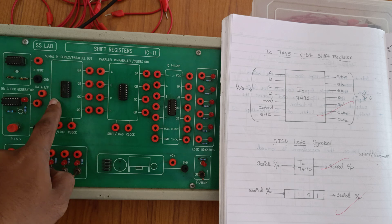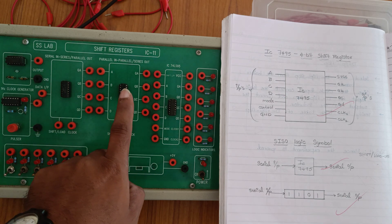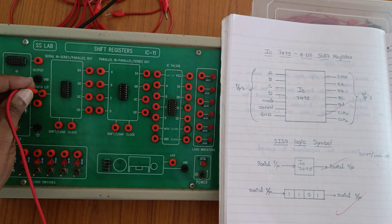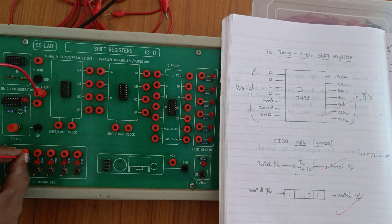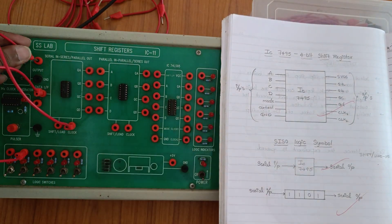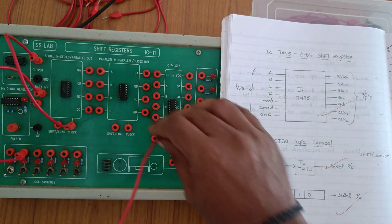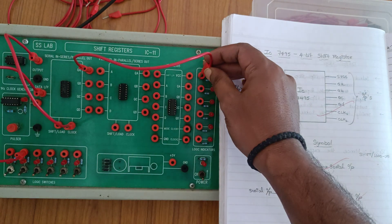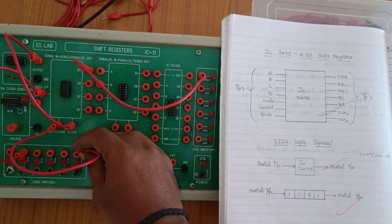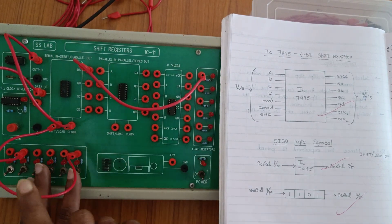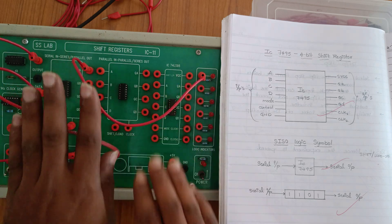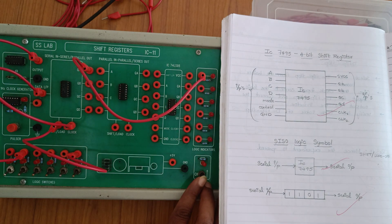For SISO and SIPO operations we have to use one IC, and for PISO and PIPO operations we have to use another IC. For the circuit diagram connections for SISO serial input, give the input slot section connection. These are the inputs and these are the outputs. Clock is given to the clock generator. While doing serial operation, put the shift load as low level, connected to the input slot section.